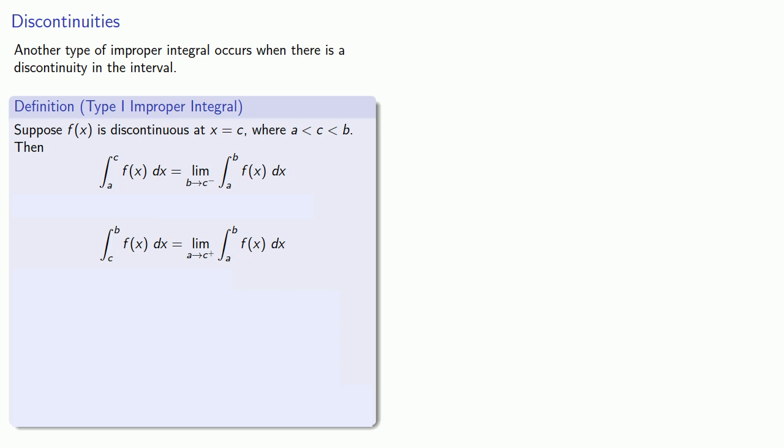Provided that the two limits exist, we'll define our integral from a to b as the sum of the two integrals.